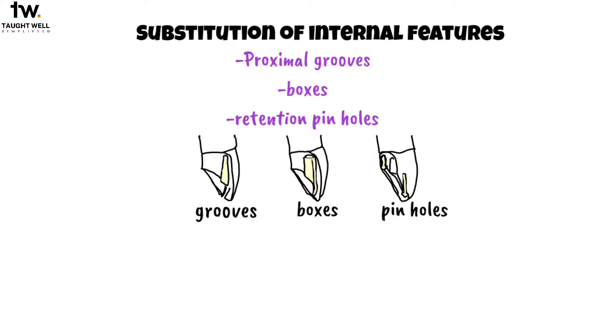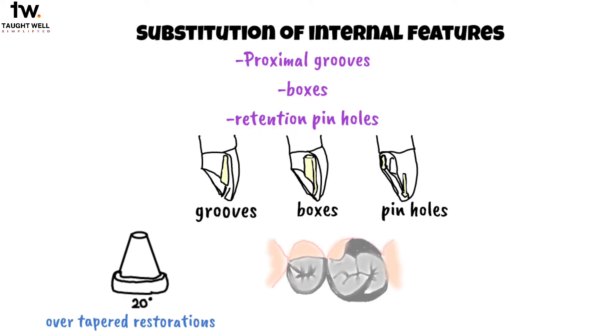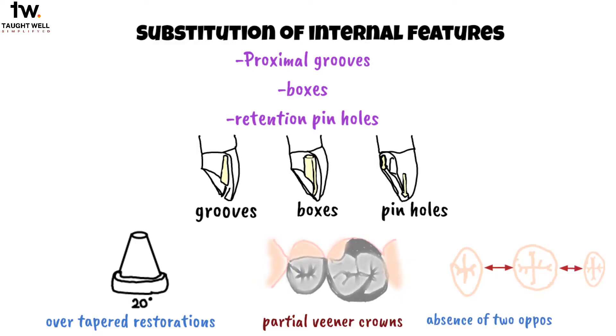These are mainly indicated in overtapered preparations, partial veneer crowns, and in the absence of two opposite walls. This is all about retention and resistance form.